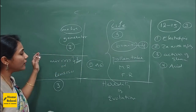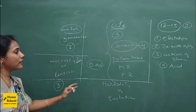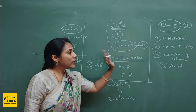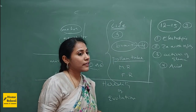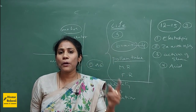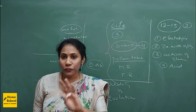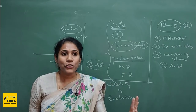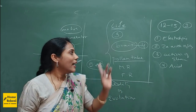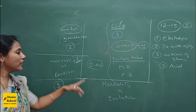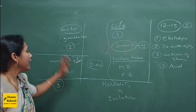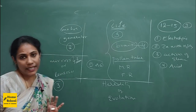So these are some important concepts for tomorrow's exam. Don't neglect the diagrams — from diagrams alone you can score a maximum of 12 to 15 marks. Practice all diagrams properly and do some smart work in the heredity and evolution chapter and also in the case of mirrors and lenses.